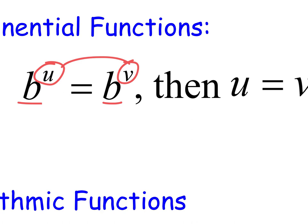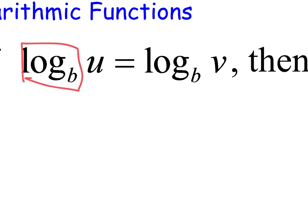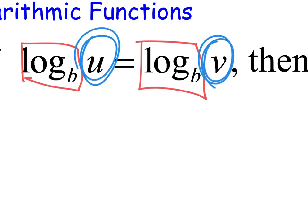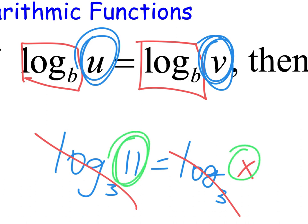If we can get the bases the same, the same thing happens with logs. If this log is the same as this log, then this has to equal this. Like, log base 3 of 11 equals log base 3 of x — just use logic. Doesn't x have to be 11? It's almost like you can knock these out. Mathematically, they don't cancel — but you can say this has to equal that.